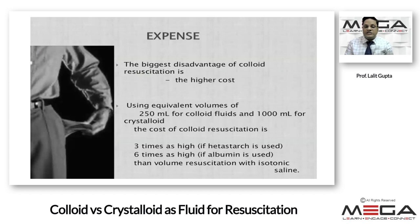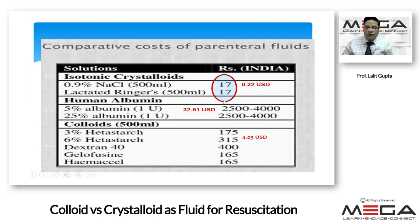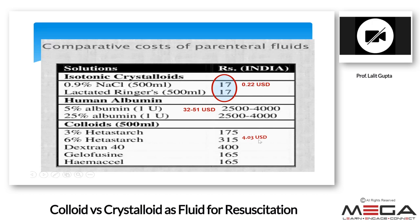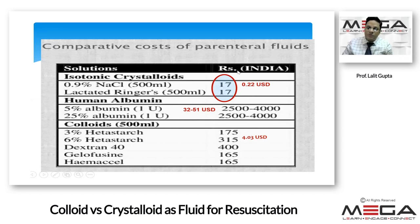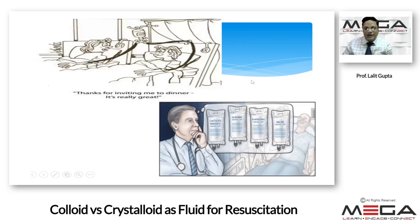Now, the most important factor is expense. The biggest disadvantage of colloid resuscitation is higher cost. Using 250 ml of colloid equivalent to 1000 ml of crystalloids, the cost is around 3 times higher if HES is used and 6 times higher if albumin is used compared to isotonic saline. Normal saline is about $0.20 (17 rupees), albumin is $30–50 (2500–4000 rupees), and HES is around $4. Crystalloids are much easier, available, and affordable. In the ICU, I will directly go with crystalloids. Thank you very much.